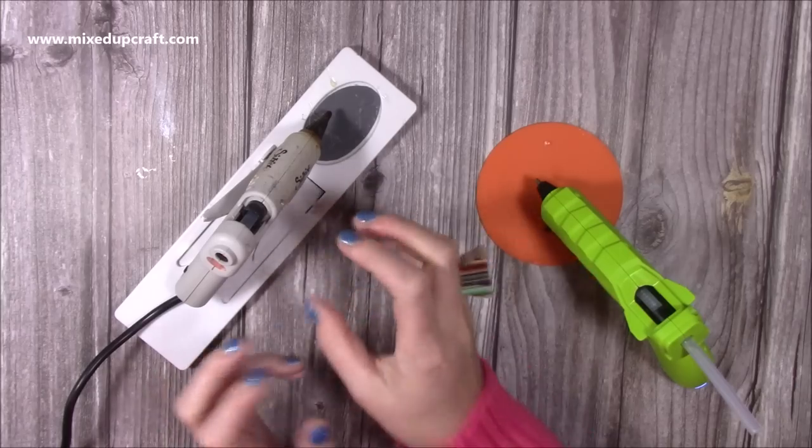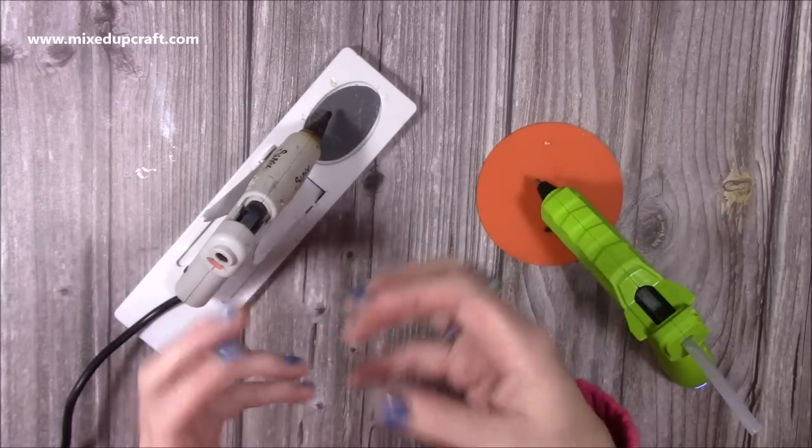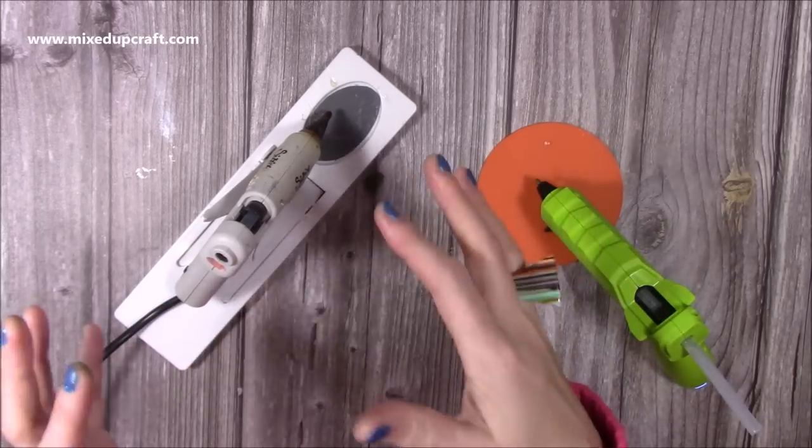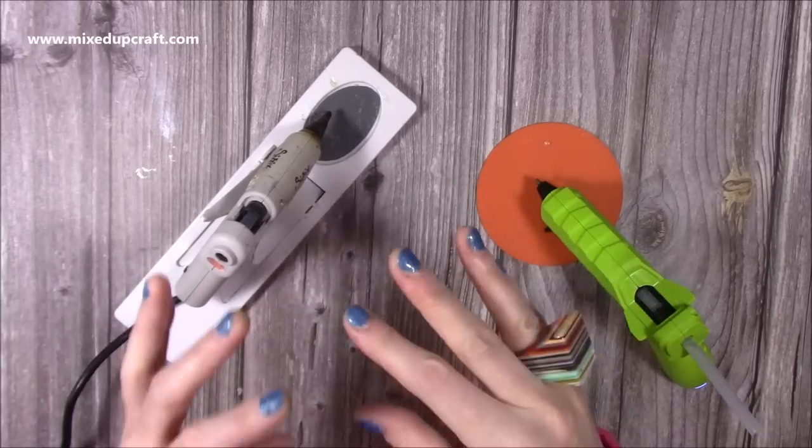And this one here, the dripping is when I initially turn it on and it's any kind of glue that was left on the nozzle, it's just kind of falling off. I find these two do not drip as I'm using them.